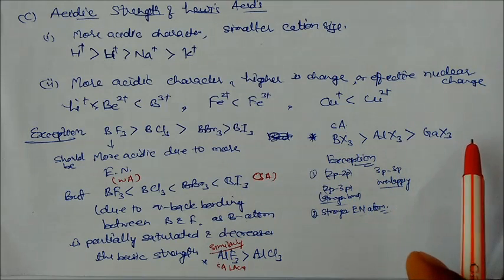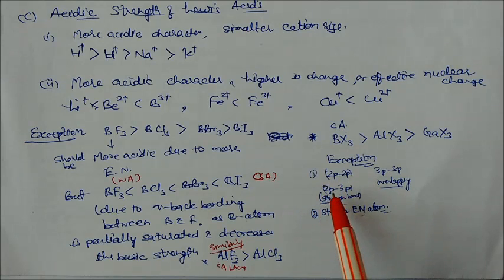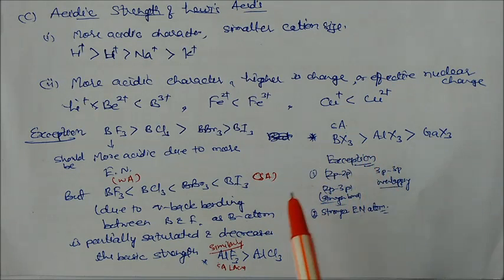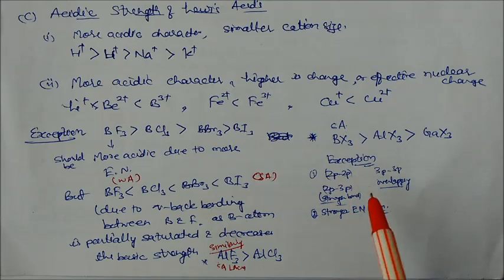Actually, here again one more exception is there: BX3 is a more stronger acid than AlX3 and gallium X3. So again here exceptions are there. Here 2p 2p bonding is stronger, so that's why these bondings are more stronger. That's why this is more acidic and this is 3p 3p overlapping, which is less stronger.